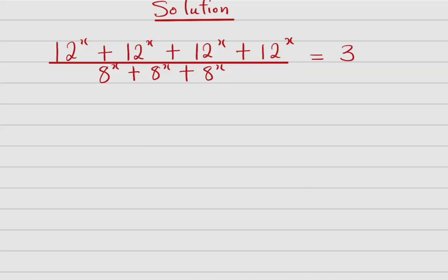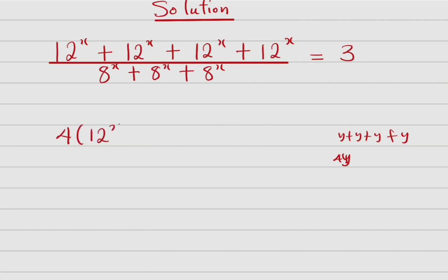Now, check the numerator — we have 12 raised to power x, plus 12 raised to power x, plus 12 raised to power x, plus 12 raised to power x, in four places. It's just like saying y + y + y + y equals 4y. So 12 raised to power x appearing four times gives us 4 times 12 raised to power x.